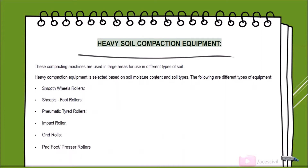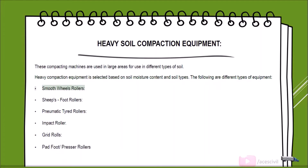Heavy soil compaction equipment is used in large areas for different types of soil. Heavy compaction equipment is selected based on soil moisture content and soil types. The different types of heavy equipment include: smooth wheel rollers, sheep's foot rollers, pneumatic tired rollers, impact rollers, grid rollers, and pad foot/presser rollers.